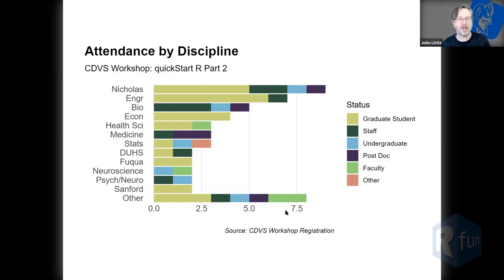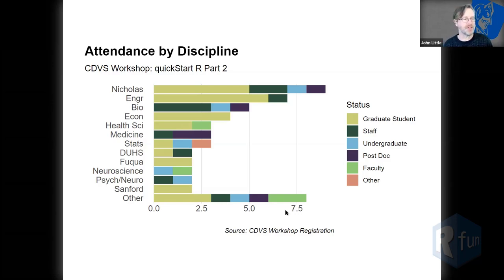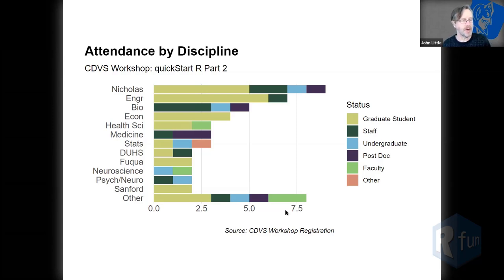This first slide tells me who's in the room by your academic status. I think this is the first time I've seen Nicholas School be the top-ranked by attendance — go Nicholas School. These are really the top nine schools, a lot of health, a lot of bio. Great to see you all here. The other category is just a conglomeration of many more like onesies and twosies.